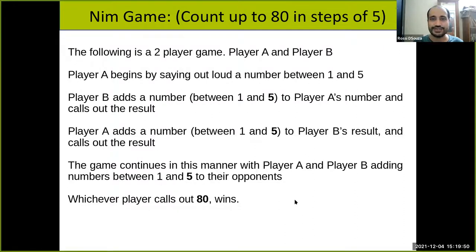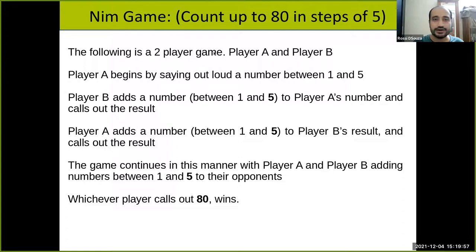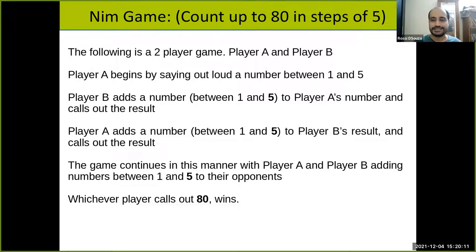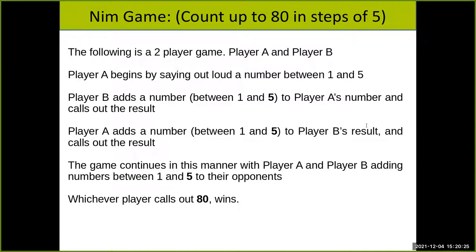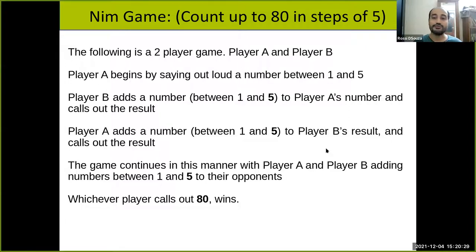Now I'll change the rules of the game: count up to 80 in steps of five. The game will be very similar. What do you think will be the pattern? Now you have a two-player game, A and B, but you begin by saying any number between one and five, then player B adds a number between one and five, and whichever player calls out number 80 wins.